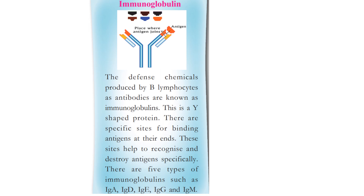The chemicals produced by B lymphocytes as antibodies are known as immunoglobulins (Ig). These are Y-shaped proteins with specific sites for binding antigens at their ends. There are 5 types of immunoglobulins: IgA, IgD, IgE, IgG, and IgM.